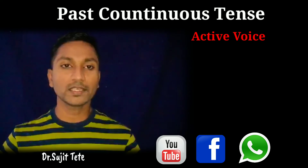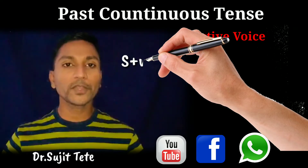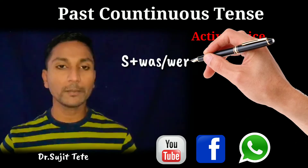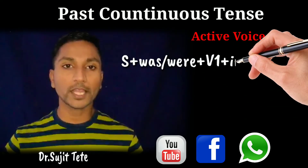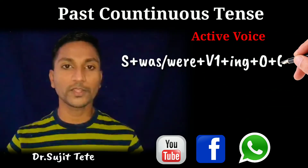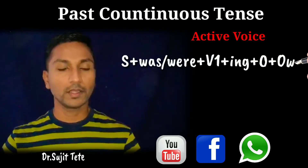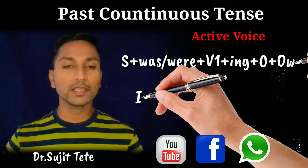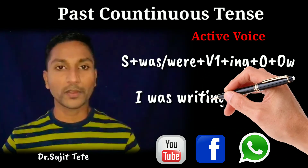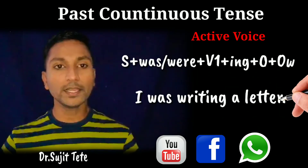Past continuous active structure is: subject plus was or were plus V1-ing plus object plus other words. The example is: I was writing a letter.